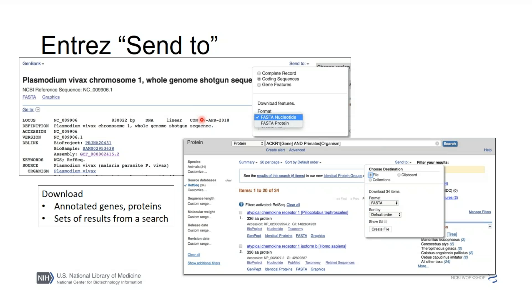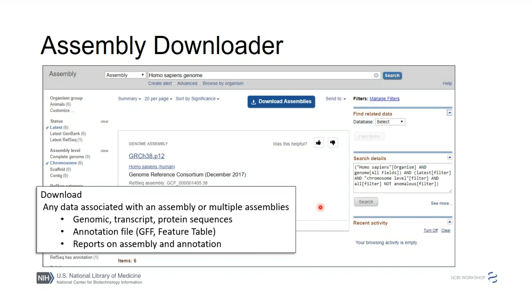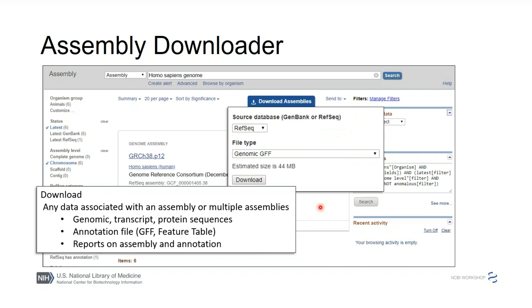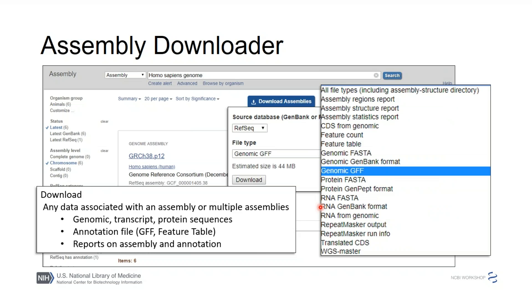Here's an example of the Entrez 'Send to' menu — I'm looking at a chromosome from Plasmodium vivax. I could download the coding sequences directly from the web using that menu. I can also download protein sequences in FASTA format. On the Assembly pages, you have a download feature to get annotation files, sequence files, and so on. For a small number of files this is handy, but for large downloads you might want to go directly to the FTP site with a script.